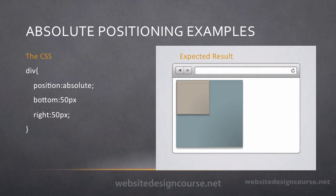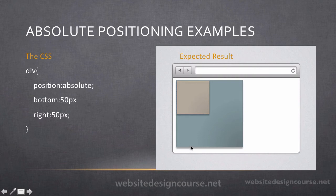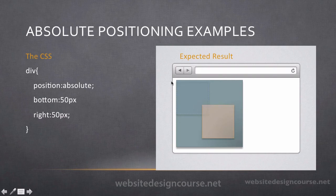With absolute positioning, remember its positioning context is according to the parent element, only if the parent element has a position. In this example, the blue box is the parent element and the brown box inside is a child tag. Because we're working with absolute positioning, its positioning context is the parent. So when it says bottom 50, it's not its own bottom edge — it's the parent element's bottom edge. A positive value on bottom moves it up 50 pixels from the parent's bottom edge, and a positive value on right moves it left 50 pixels from the parent's right edge. So bottom 50, right 50 would place the box 50 pixels from the right edge and 50 pixels from the bottom edge of the parent element.